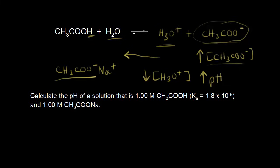So there are two sources for your acetate anion: one is the ionization of acetic acid, and the other source is the sodium acetate that you added in. So we have two sources, and we'd expect a pH that's higher than just a solution of acetic acid alone. Let's go ahead and do the calculation and see that that is true.